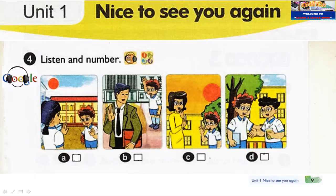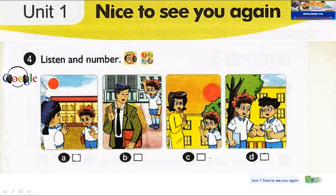Page 9, Activity 4: Listen and number. 1: Good morning, Miss Hien. Good morning. What's your name? My name's Tom. T-O-M. Tom White. I'm from America. 2: Hello. I'm Tom. I'm from America. Hello, Tom. I'm Mai. I'm from Vietnam. Nice to meet you, Mai. Nice to meet you, too.